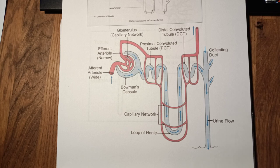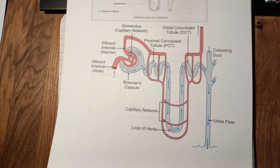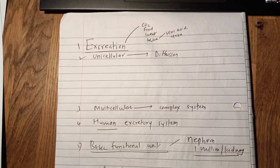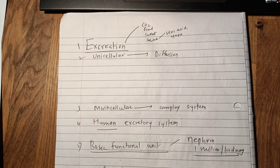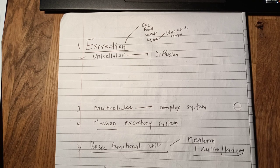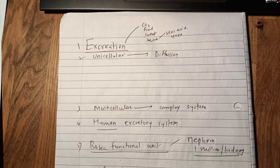I'm not going to go into much detail of the human excretory system, just whatever is there in your CBSE book. So basically, what is excretion? Excretion is a life process — it is essential, meaning one cannot live without excretion. The body generates various metabolites, metabolic end products, and these are harmful to the body. They need to be removed from the body by a process called excretion.